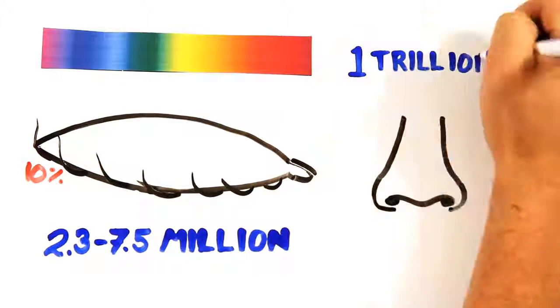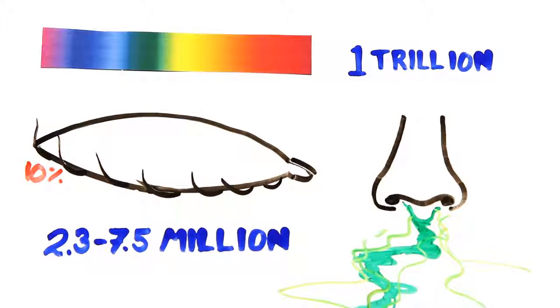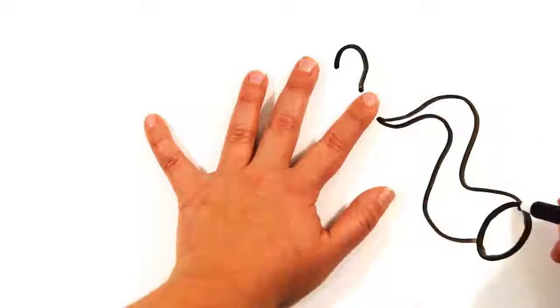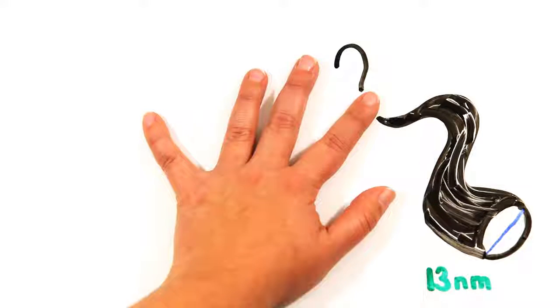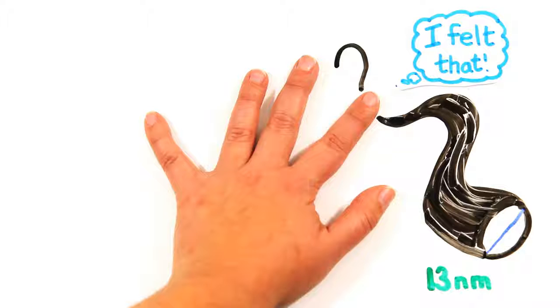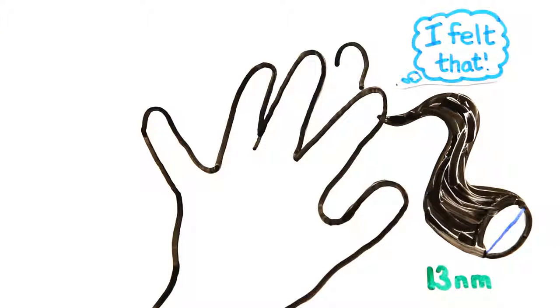Your nose is able to discriminate between 1 trillion different smells, meanwhile your fingers can feel a ridge as small as 13 nanometers in size. That's 7,500 times smaller than the diameter of a human hair.